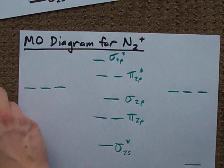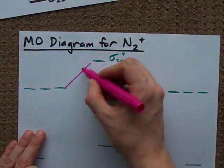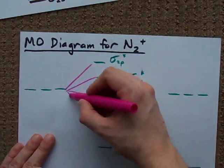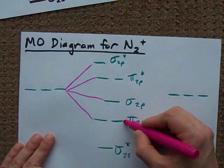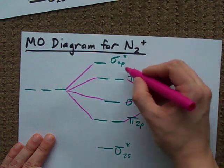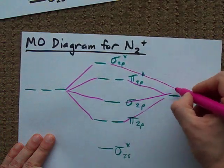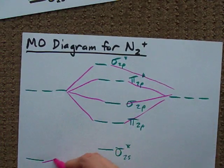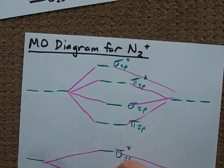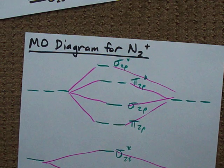It's ideal to draw in those funky lines that they always seem to show. Then you've got to fill it with electrons.